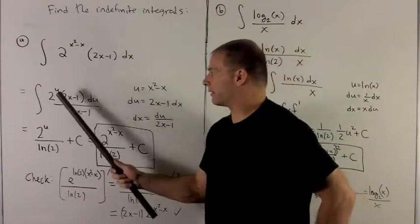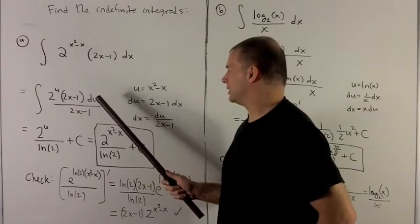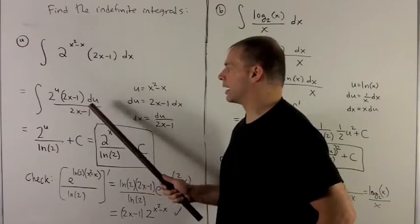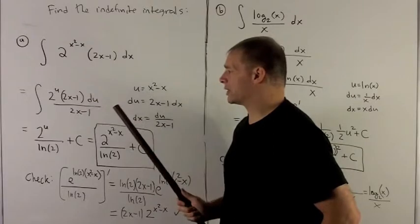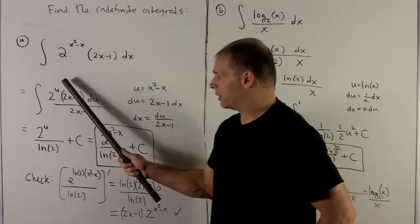We substitute everything in. I have 2 to the u. We carry that over, and then dx is du over 2x minus 1. The 2x minus 1s cancel, and now what I'm left with is 2 to the u du.